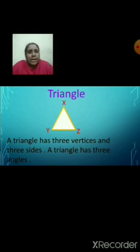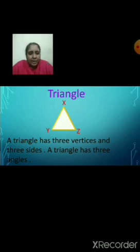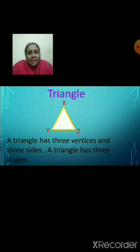The next geometrical shape is a triangle. A triangle has three vertices and three sides. A triangle has three angles. Name the vertices: X, Y, Z. Name the sides of a triangle: XY, YZ, and ZX. Name the angles in this figure: angle X, angle Y, angle Z.